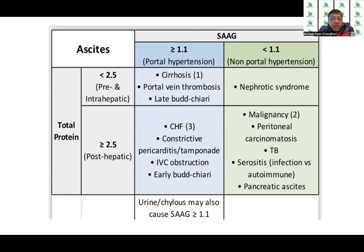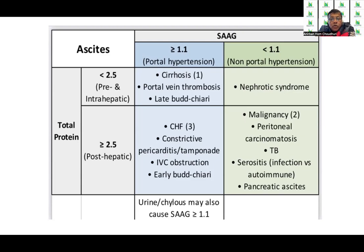If total protein is more than 2.5 with a SAAG greater than 1.1 indicating portal hypertension, the cause can be CHF or constrictive pericarditis. Whereas if SAAG is less than 1.1, that indicates conditions like malignancy, peritoneal carcinomatosis, TB, or serositis. This table is useful in distinguishing post-hepatic from pre- and intra-hepatic causes, as well as assessing the presence or absence of portal hypertension.